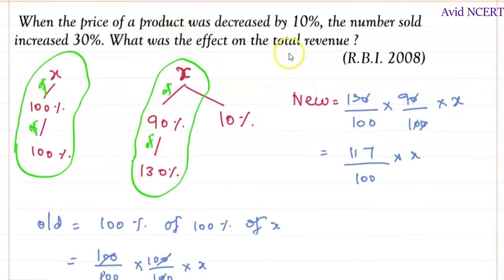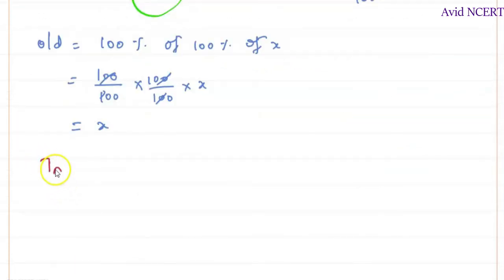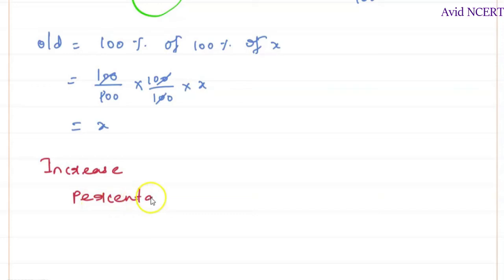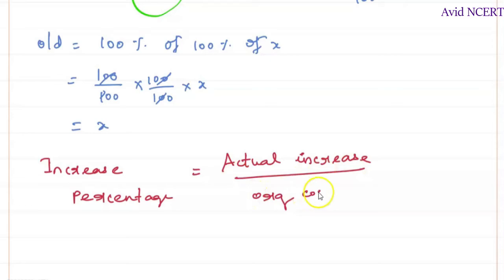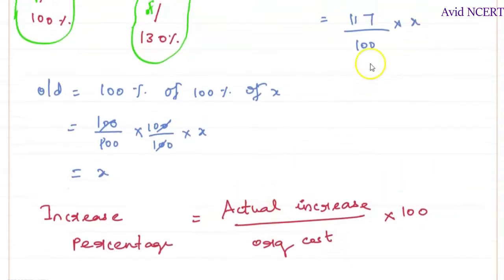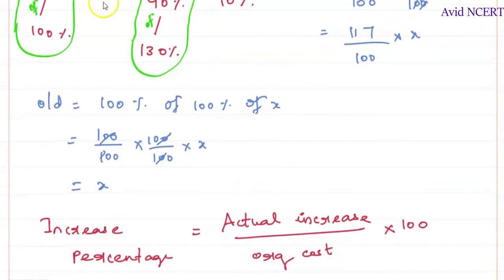The question asks for the effect on total revenue. The increase percentage formula is: increase percentage equals actual increase divided by the original cost, times 100. The actual increase is the new revenue minus the old revenue.